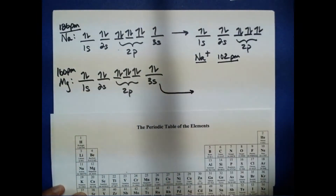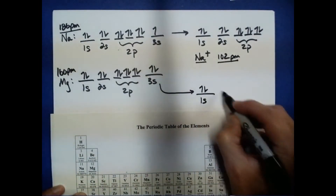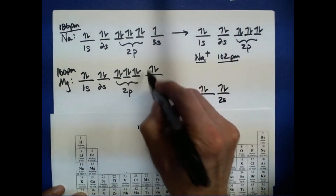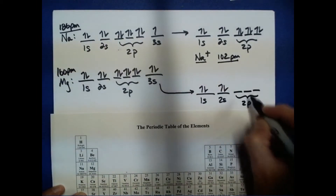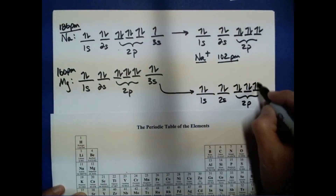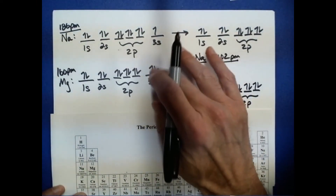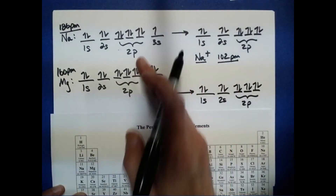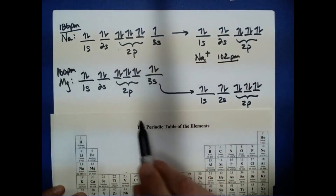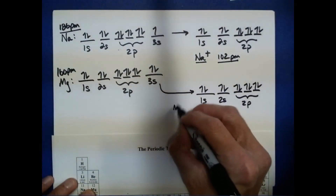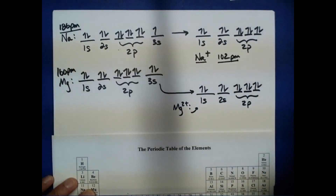The same thing happens when we go from magnesium to magnesium 2+. We remove both of the 3s electrons, ending up with the same electronic configuration as neon, the nearest noble gas. Once again, we remove that entire 3s subshell, which really contracts the size of the particle upon moving from magnesium to magnesium 2+.